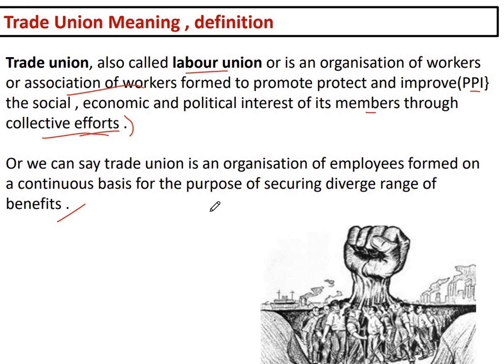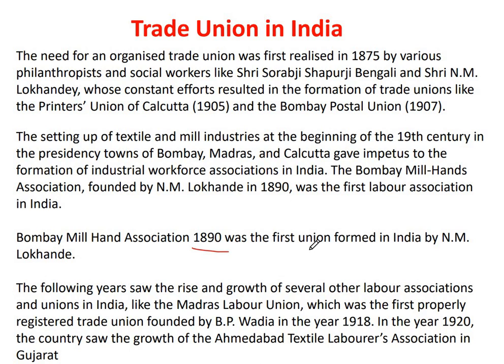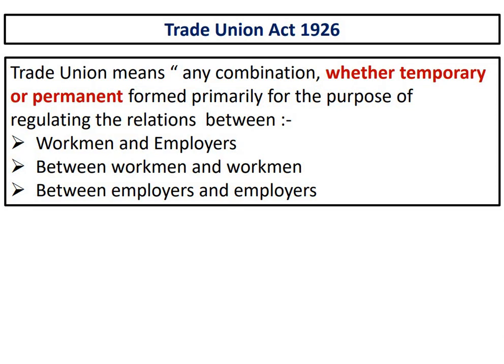अब meaning से भी समझ सकते हो — union मतलब एक जुट, एक साथ, और trade union यानी labor union जहाँ पे सारे workers एक साथ जुट के collectively effort लगाते हैं, अपने social, economic, political interest को promote करते हैं या save करते हैं। इंडिया में सबसे पहला trade union form हुआ था Bombay Mill Hand Association in 1890. यह first trade union था। अब next है हमारा Trade Union Act 1926.